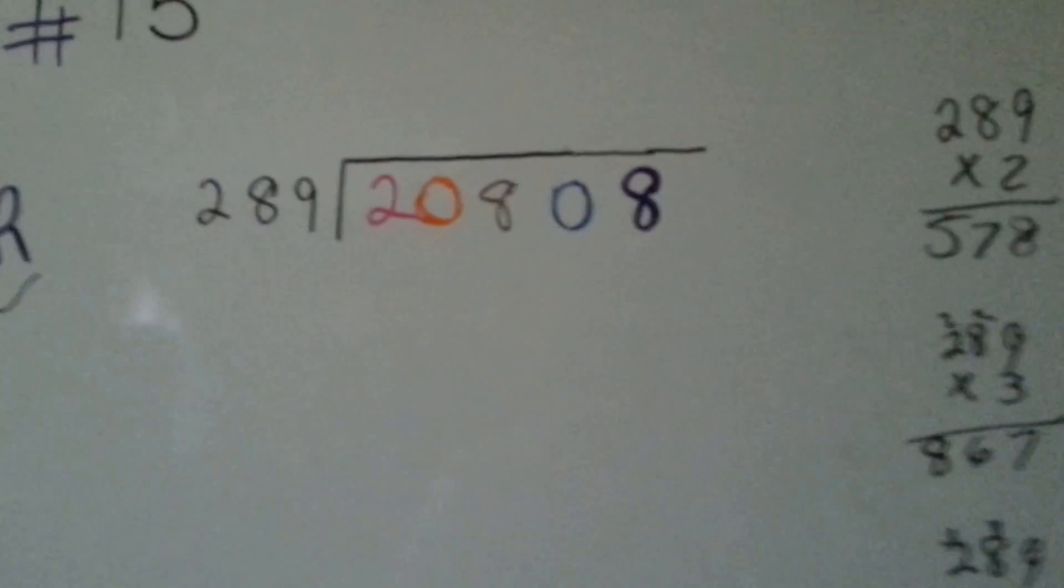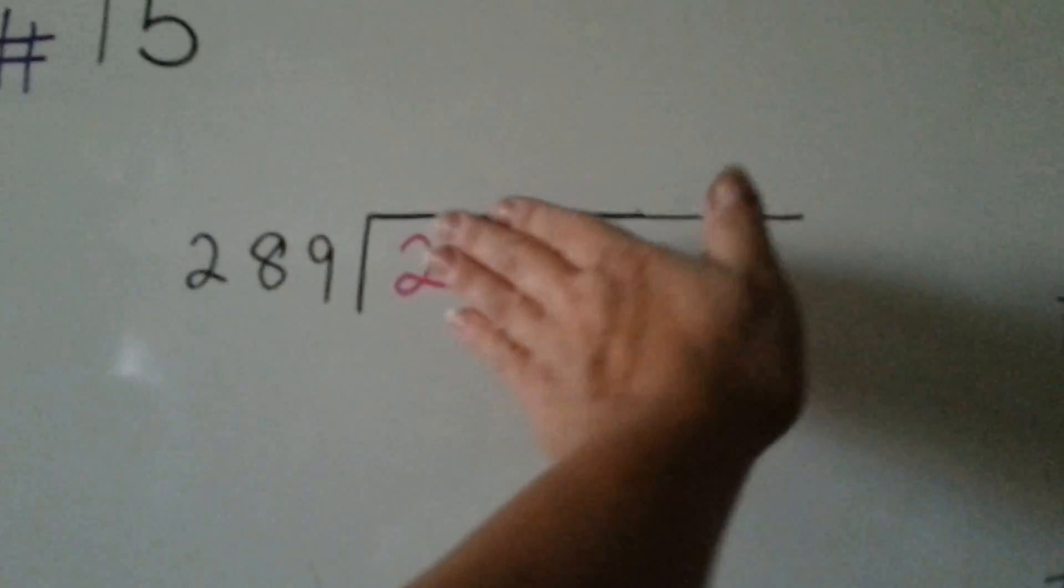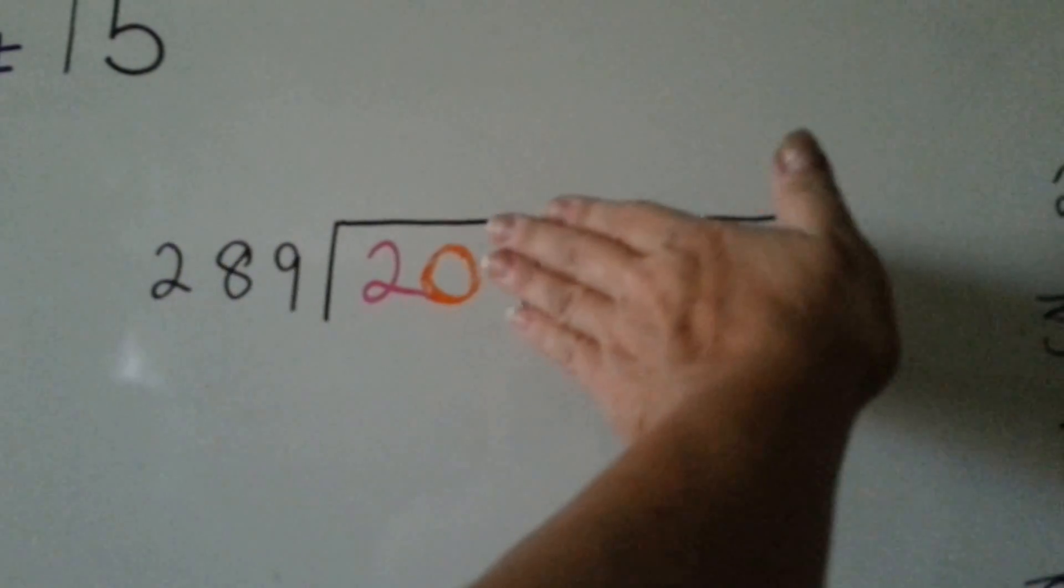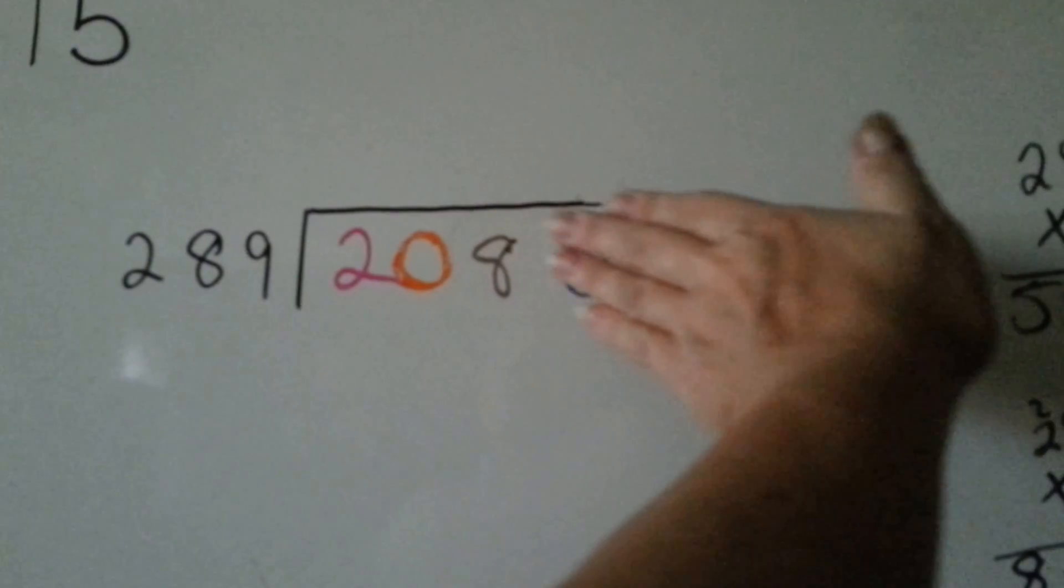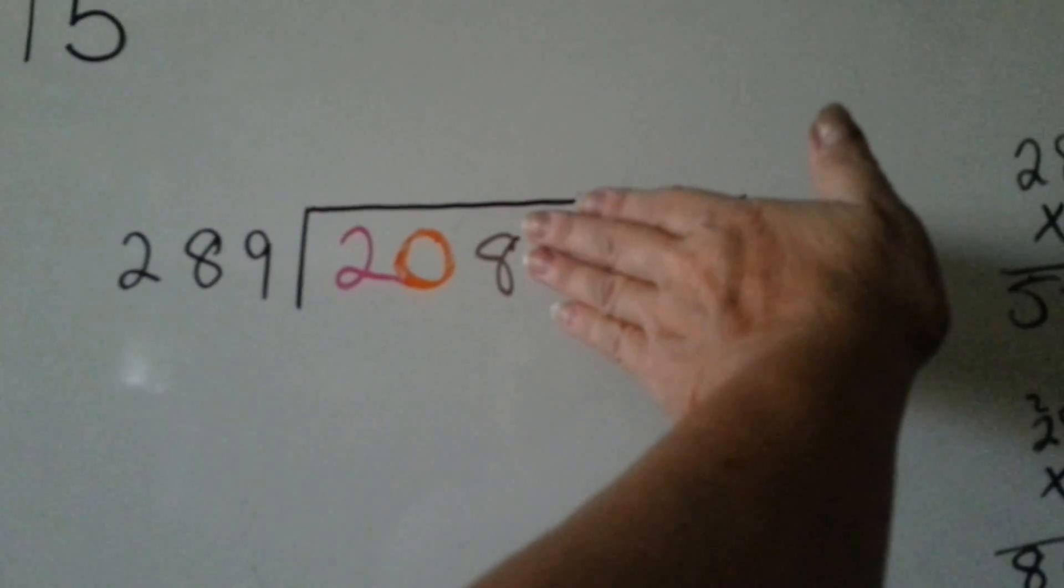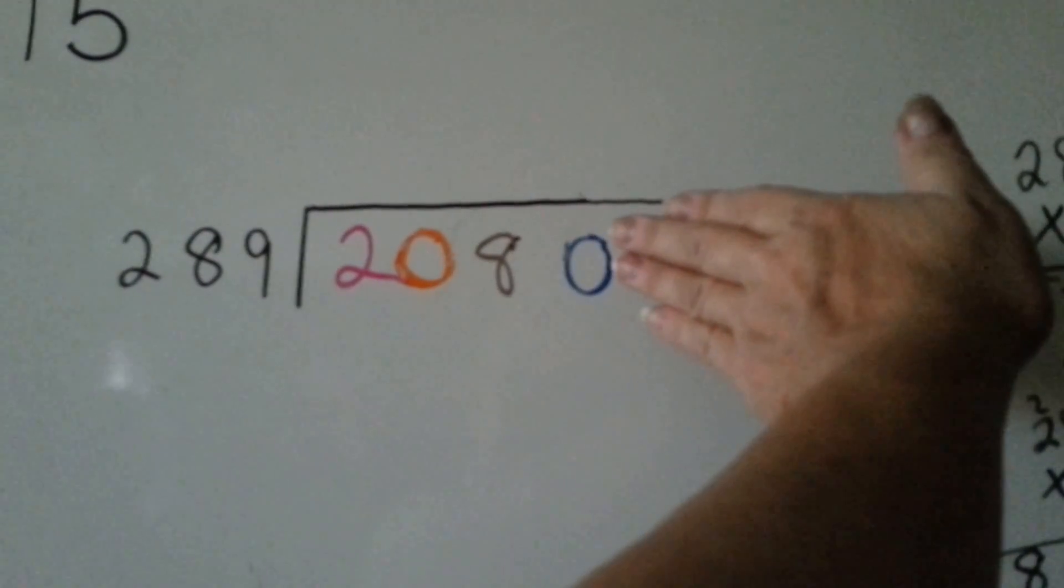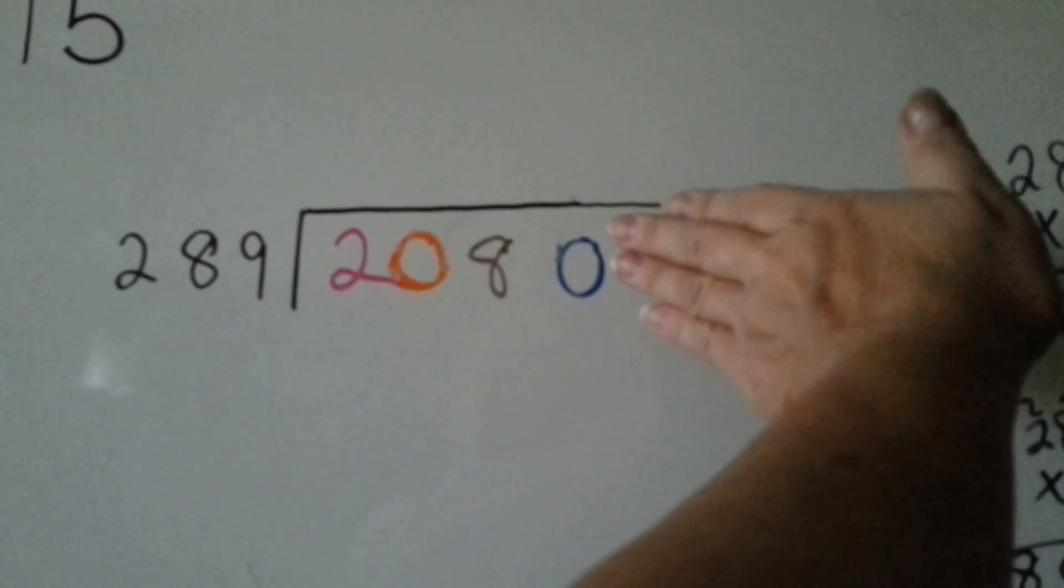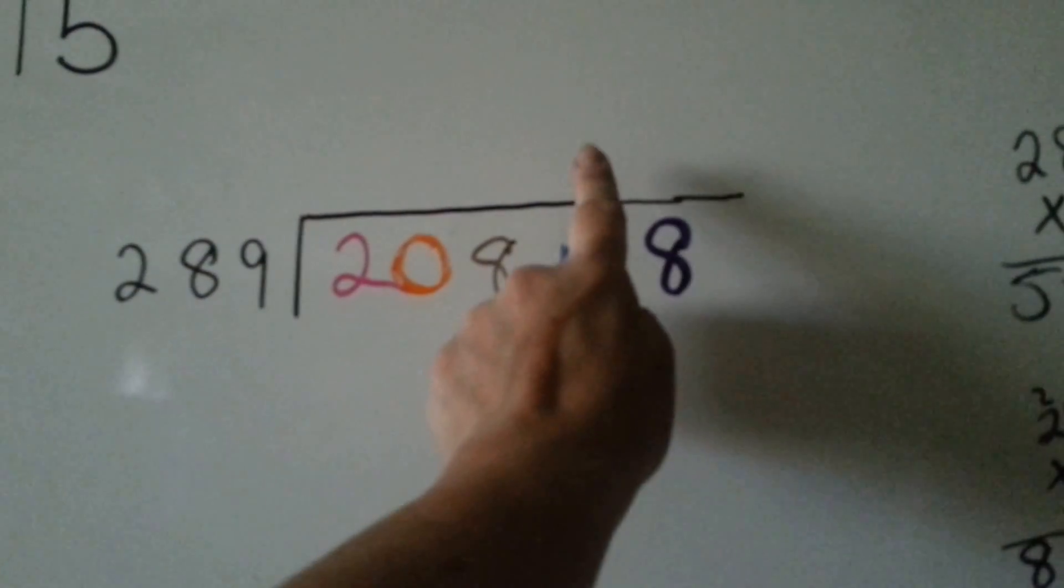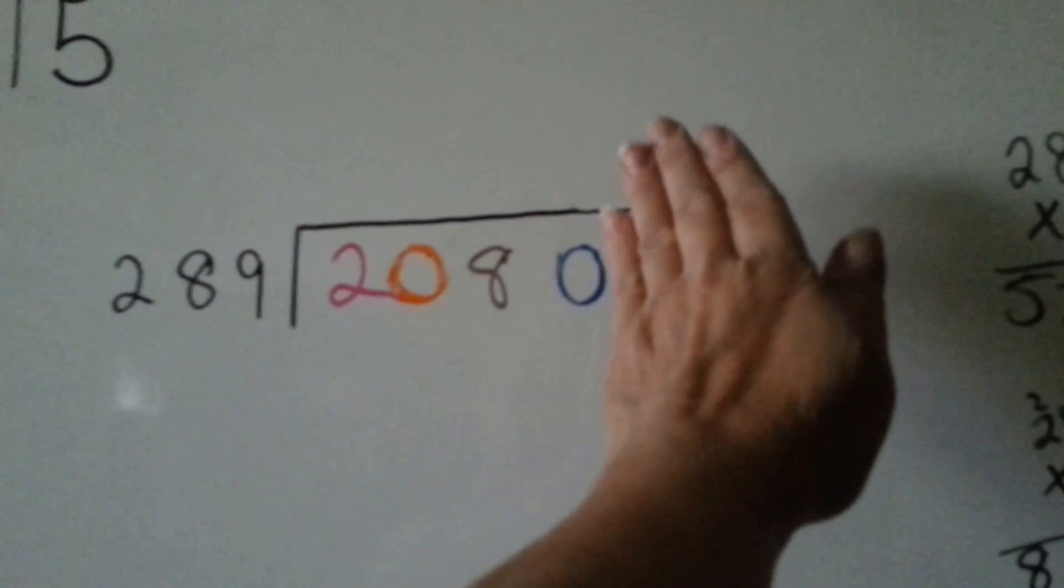The first thing we're going to do is ask ourselves, can the 289 fit into 2? Of course not. And not into the 20 either. And it can't fit into the 208 either. So we're going to have to go with the blue zero, 2080. And our answer will go above the blue zero because that's the one it fit into.